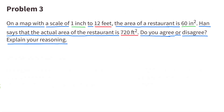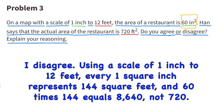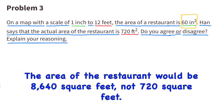Number three: on a map with a scale of one inch to 12 feet, the area of a restaurant is 60 square inches. Han says the actual area of the restaurant is 720 square feet. Do you agree or disagree? I disagree. Using a scale of one inch to 12 feet, every one square inch represents 144 square feet, and 60 times 144 equals 8,640 — not 720. The actual area of the restaurant would be 8,640 square feet.